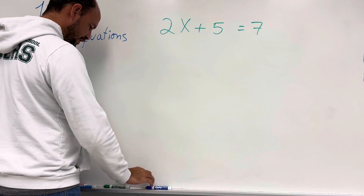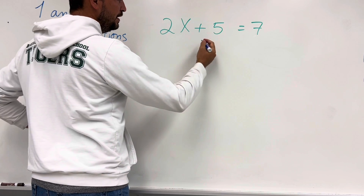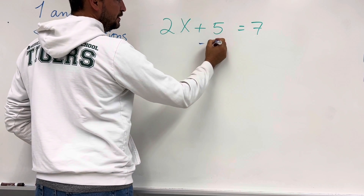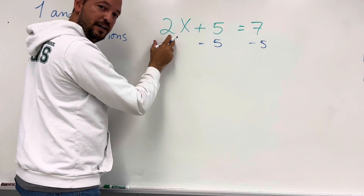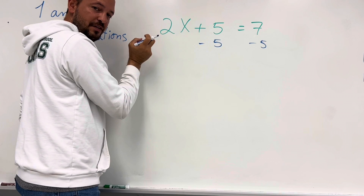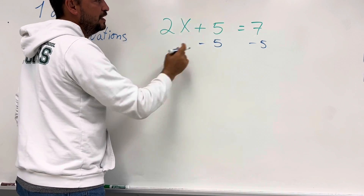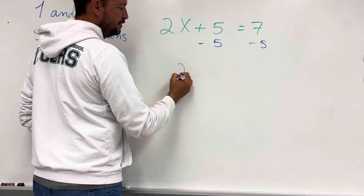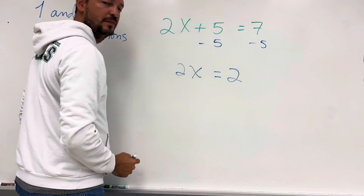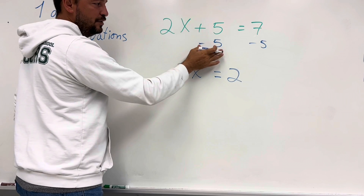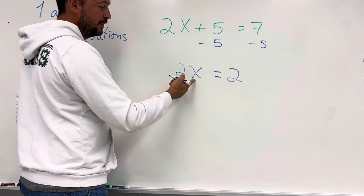We have 2x plus 5 equals 7. This is called two steps because we solve it in two steps. Step one: I need to subtract 5 on both sides to isolate the variable term. This gives us 0, so we have 2x equals 7 minus 5, which is 2.